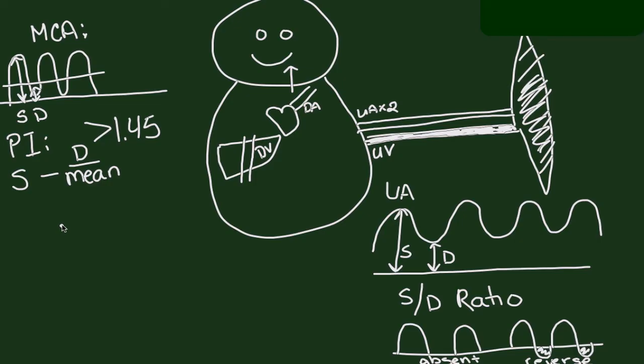So those are both arterial Dopplers in the baby. The next thing that we can interrogate to see just how much cardiovascular compromise you have in that growth-restricted baby that's showing abnormal arterial Dopplers is then you begin to interrogate the venous Dopplers. And so the ductus venosus is the most important vessel that we look at to measure that.